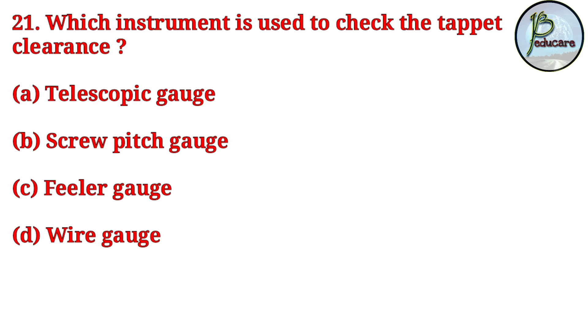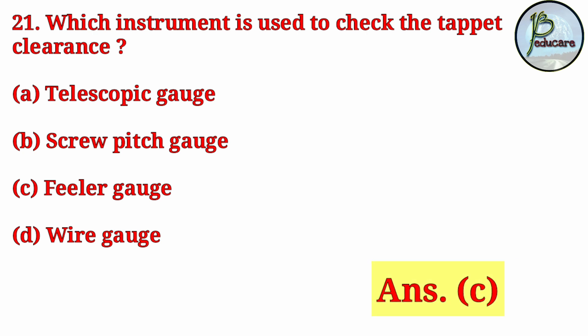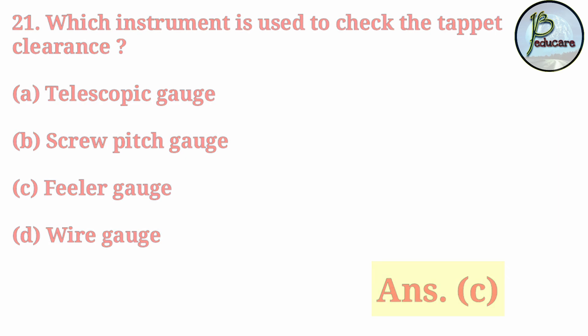Which instrument is used to check the tappet clearance? Which instrument is used to check tappet or valve clearance? The correct answer is Answer C — feeler gauge. A feeler gauge is used to check tappet or valve clearance.